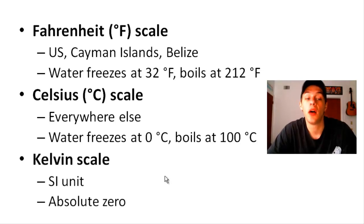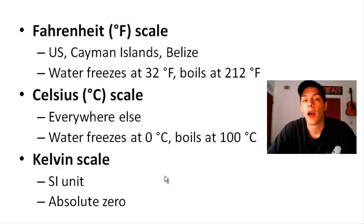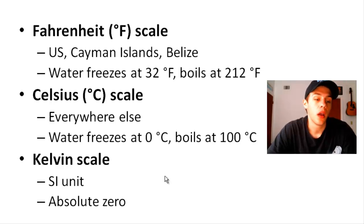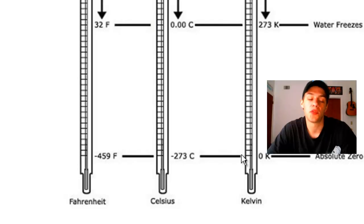The final scale is the Kelvin scale. As mentioned when discussing units of measurement, the Kelvin is the SI unit for temperature. The reason is that the Kelvin scale is an absolute scale — zero Kelvin is the lowest possible temperature, also known as absolute zero. Kelvin recognized that there does indeed exist a lowest possible temperature; you can't just keep going infinitely colder. That lowest possible temperature, based on our current scientific understanding, is zero Kelvin.